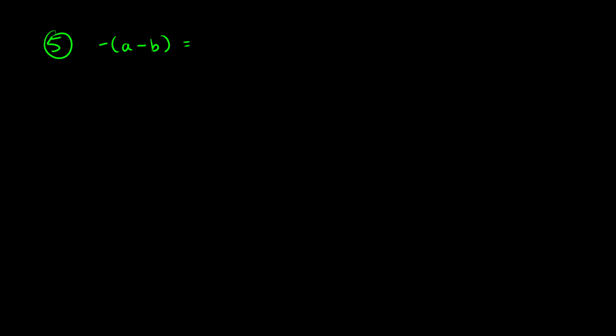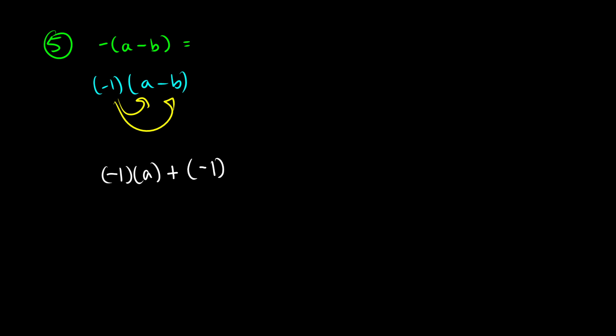The final rule we'll look at is when we do negative (a minus b). So now we have a subtraction inside. Distributing negative 1: we take negative 1 times a, and then add negative 1 times negative b. Remember, a minus b is the same as a plus negative b.